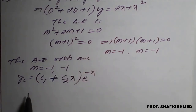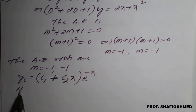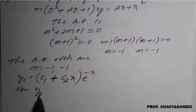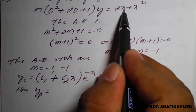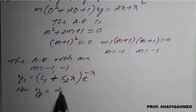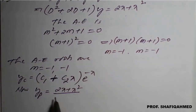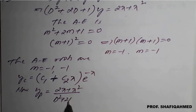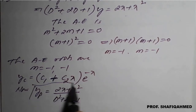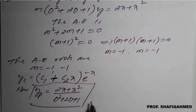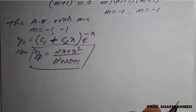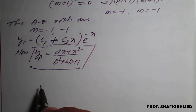Now we have to find the particular integral. yp equals the right-hand side, that is 2x plus x square, divided by f of D, that is D squared plus 2D plus 1. We have to simplify this using the division method.